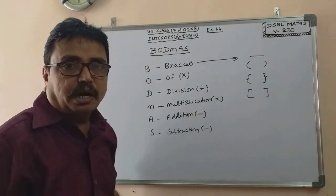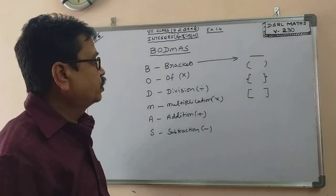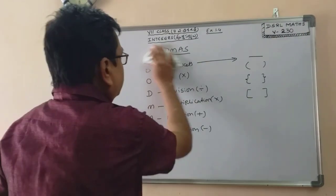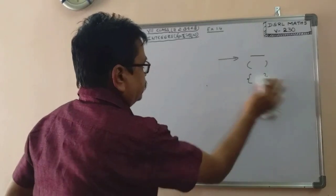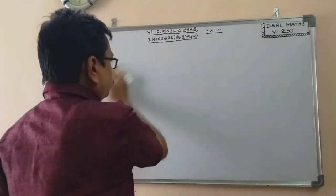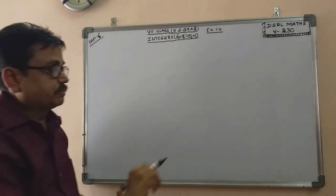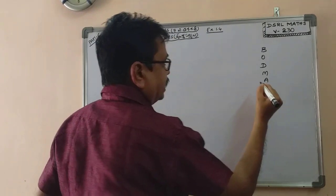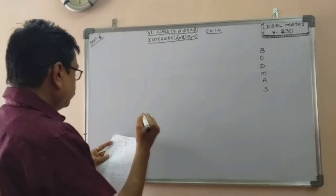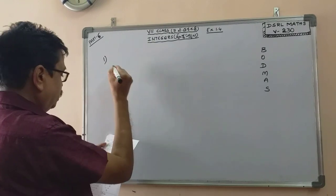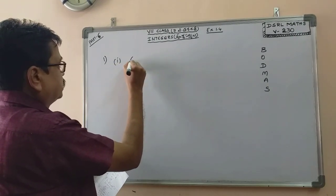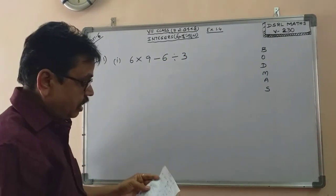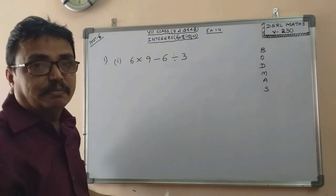In this BODMAS rule, we will use it for simplification sums. Let us write the first example: 6 into 9 minus 6 divided by 3. First step: 6 into 9 minus 6 divided by 3.